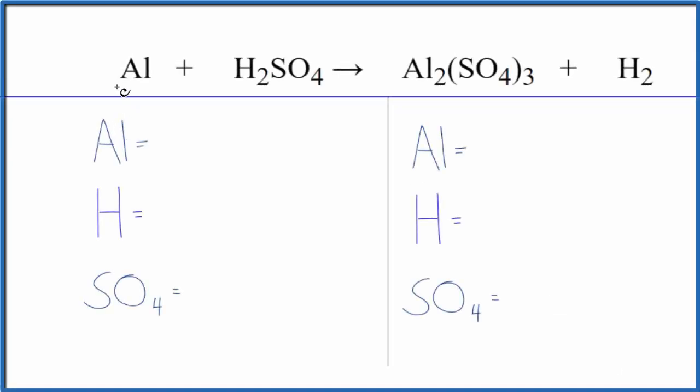In this video, we'll balance the equation Al plus H2SO4. This is aluminum plus sulfuric acid.